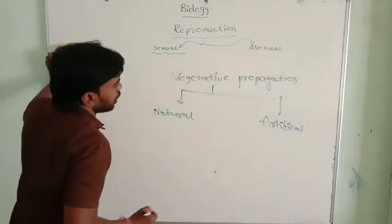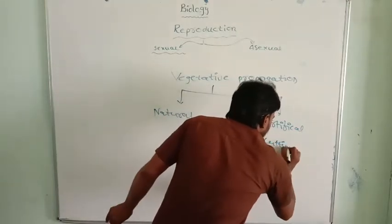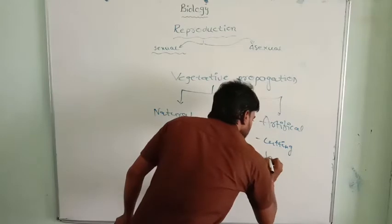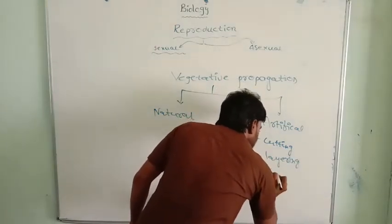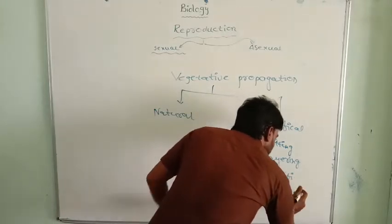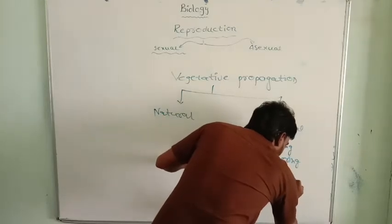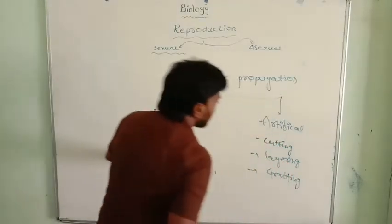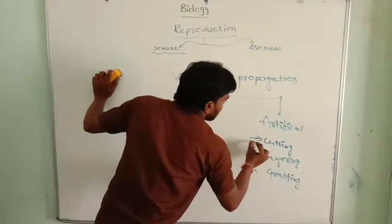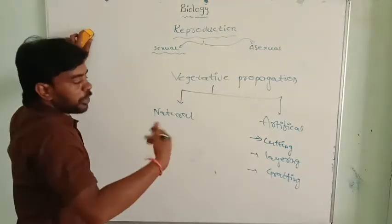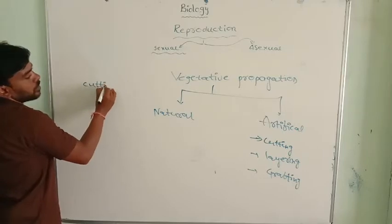Artificial propagation. In artificial propagation: cutting, layering, and grafting. These are the three methods, these are the three techniques we can artificially produce the plants. For example, first one, cutting.